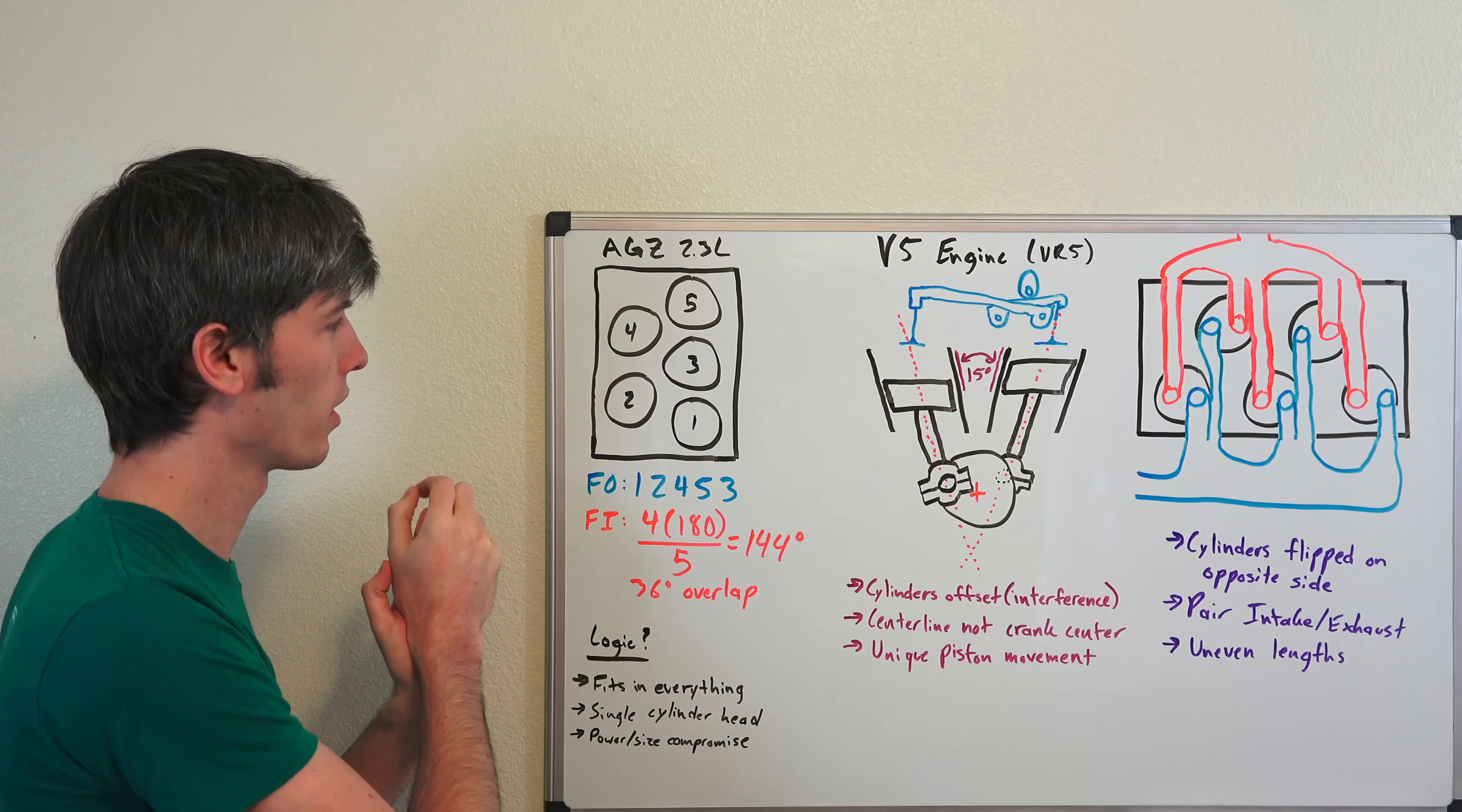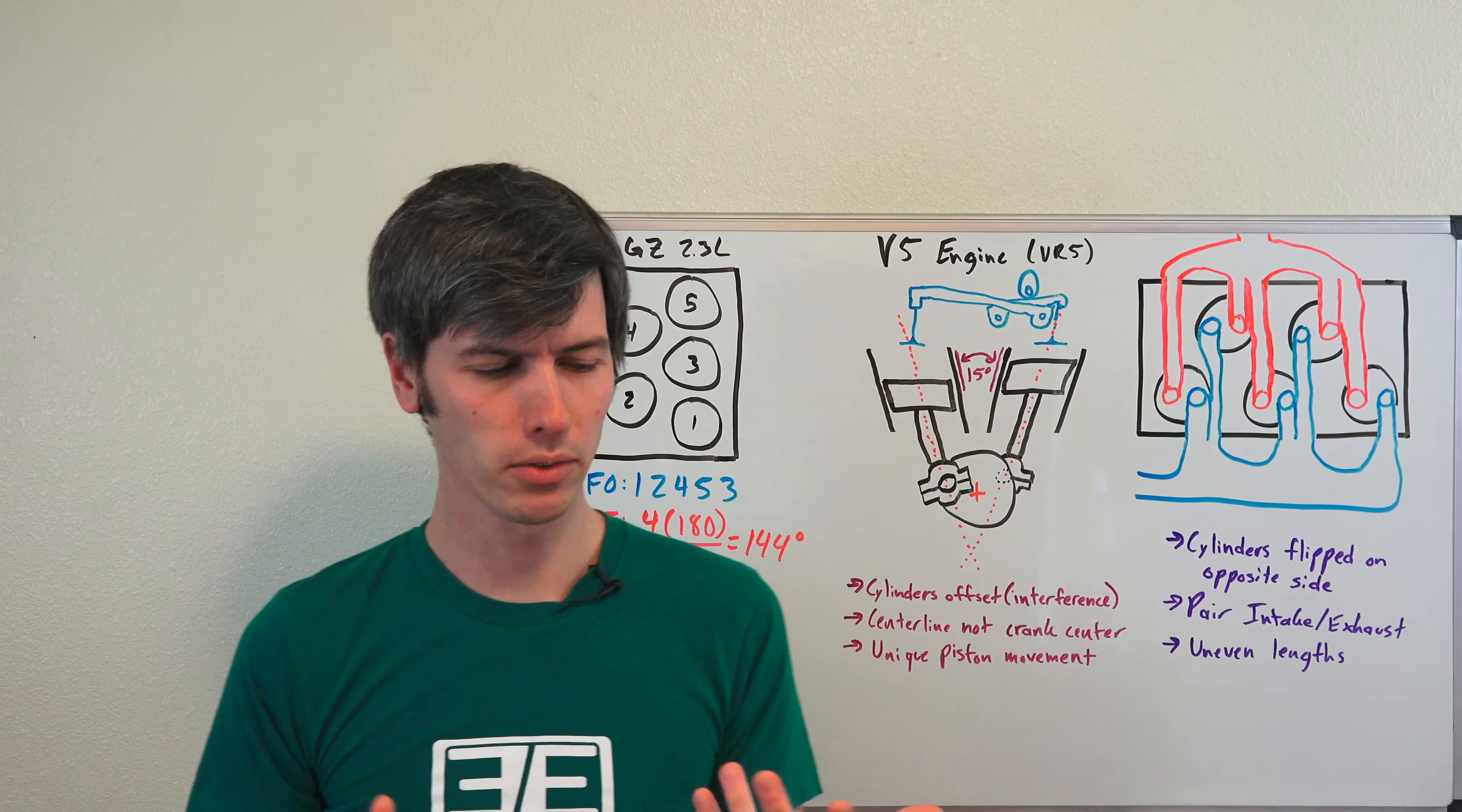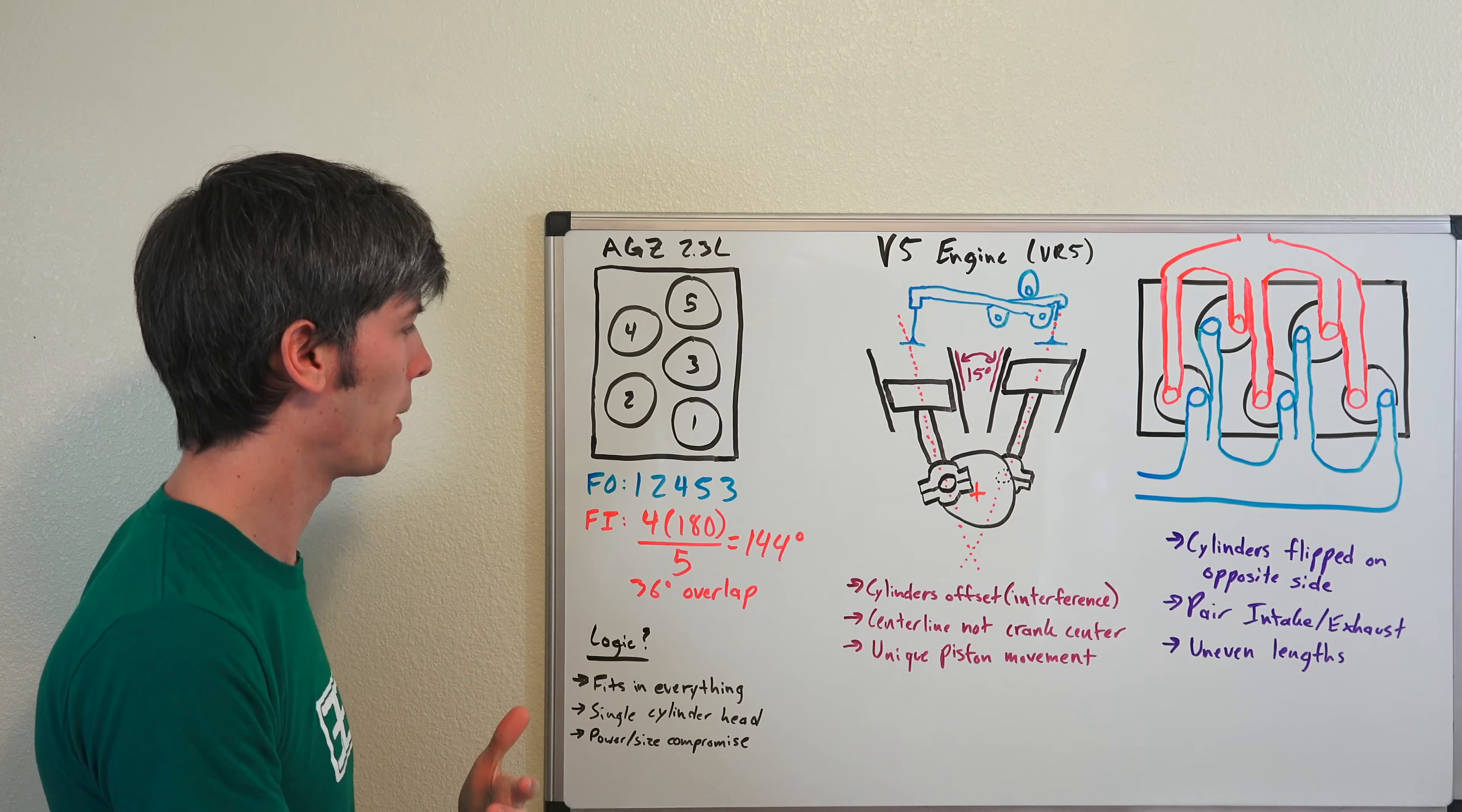Then your firing order, which is kind of interesting, one, two, four, five, three. So it just goes in this clockwise circle here as it rotates around. Volkswagen decided the VR6 is too big and too powerful for some cars and an inline four just isn't quite enough. So this sits nicely in between and did at the time as far as power output.